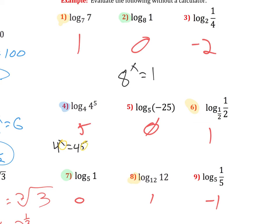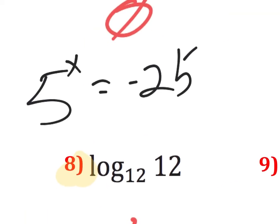And the last one to bring special attention to is number 5 here. Log base 5 of negative 25. If I tried solving 5 to some power equals negative 25, I could try and try and try, but I'm never going to succeed. You can't put in any exponent to get a negative 25. You can't use exponents to get negative solutions.